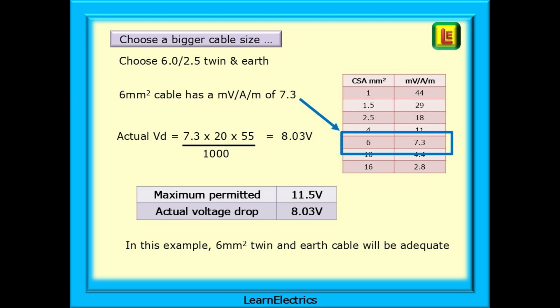What happens if we choose a bigger cable size, ignoring the fact that it costs more money? If we choose 6x2.5 twin and earth, the table tells us the 6mm cable has an MVAM number of 7.3. If we put this number into the calculation, we have a voltage drop of just 8.03 volts. Perfectly acceptable. The maximum permitted voltage drop is 11.5 volts and the actual voltage drop is just over 8 volts. In this example, 6mm twin and earth cable will be adequate.